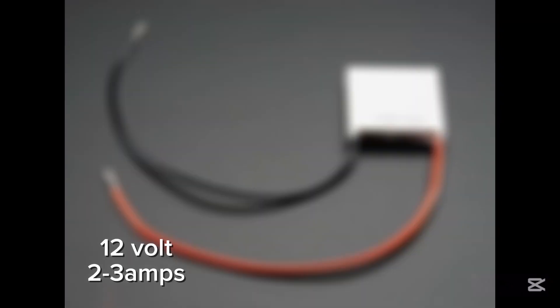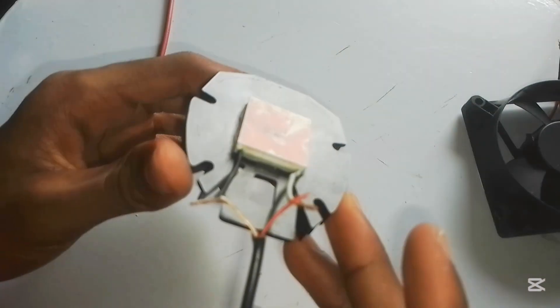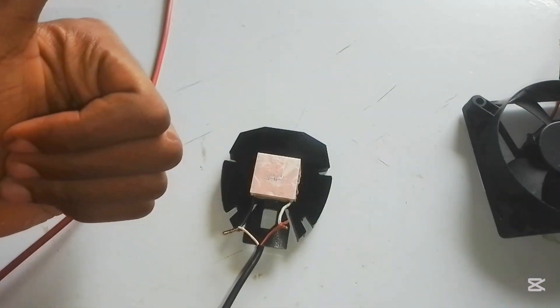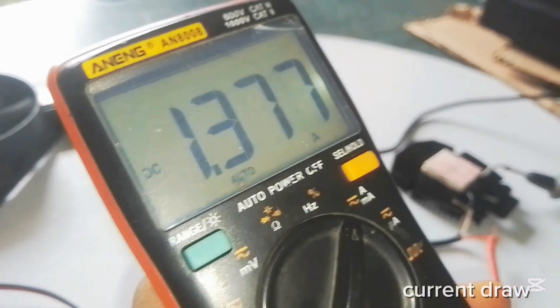Such as the 12 volt 2 to 3 amps and also the 5 volt 1 to 2 amps. The one which I have here is the 5 volt 1 to 2 amps type of Peltier model which I'll be using in this video and interfacing today.